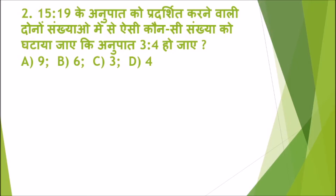Second question बहुत important है और थोड़ा confusing भी। प्रश्न है: 15 ratio 19 के अनुपात को प्रदर्शित करने वाली दोनों संख्याओं में से ऐसी कौन सी संख्या को घटाया जाए कि अनुपात 3 अनुपात 4 हो जाए? Options हैं: 9, 6, 3, या 4। दोनों संख्याएं होंगी 15x और 19x। x = 1 लेने पर संख्याएं होंगी 15 और 19।